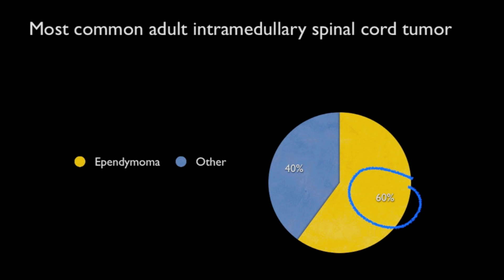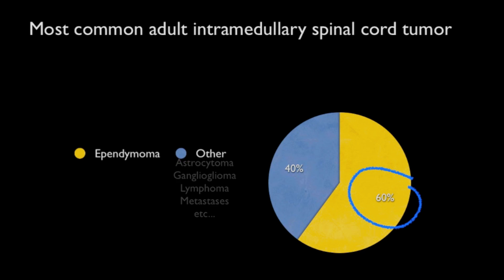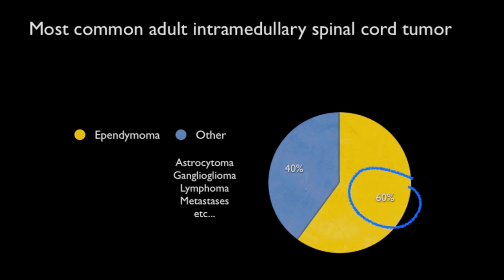The remaining 40% are comprised of astrocytomas, gangliogliomas, lymphomas, metastases, and other rare entities.